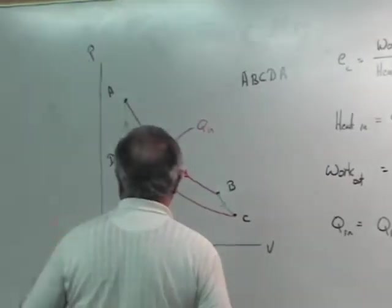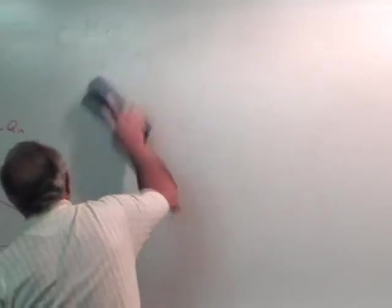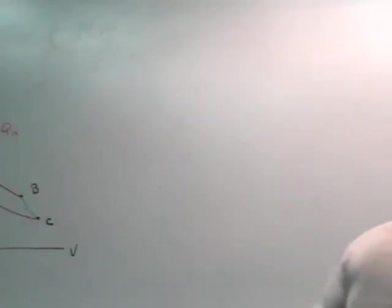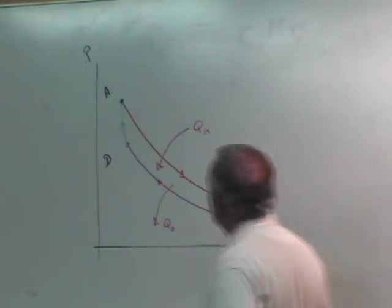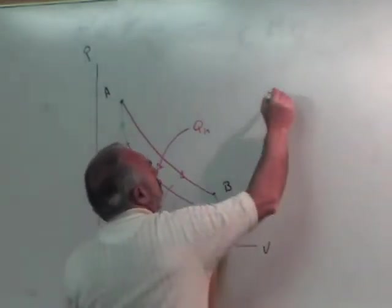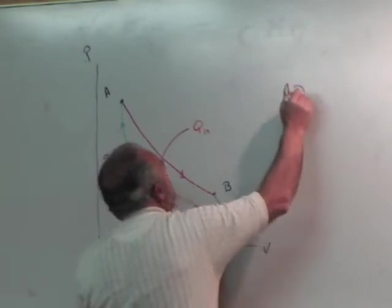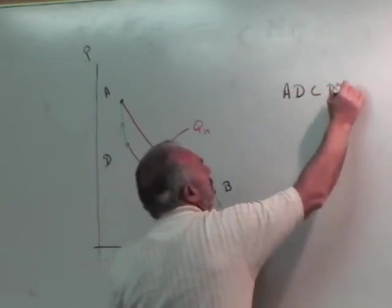All right, next thing I would like to do is I'd like to run Carnot backwards. What would happen if you ran Carnot backwards? Let's talk a little bit about it. If you run Carnot backwards, I'm imagining starting at A and going this cycle, A, D, C, B, A.